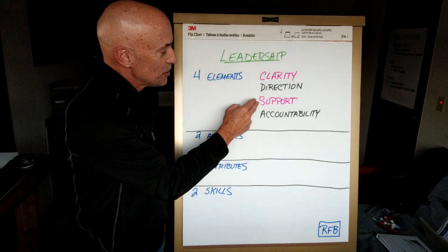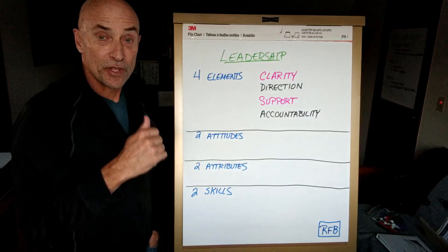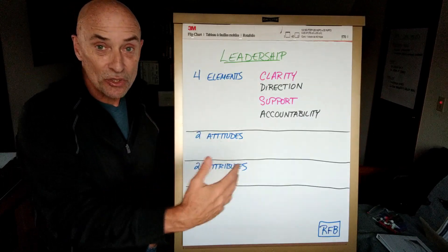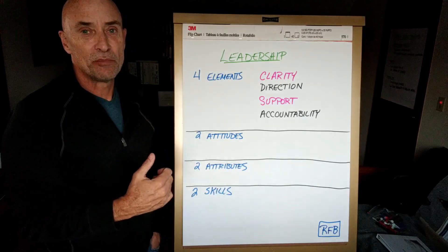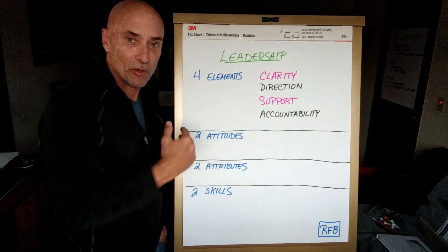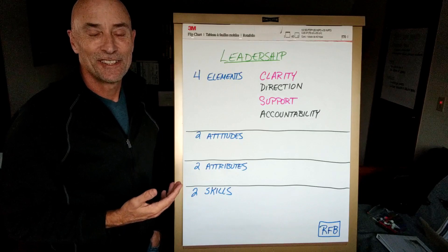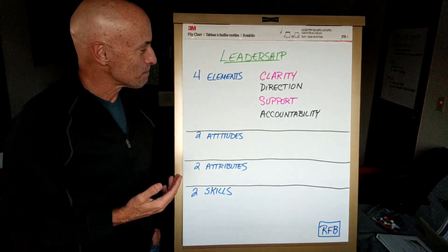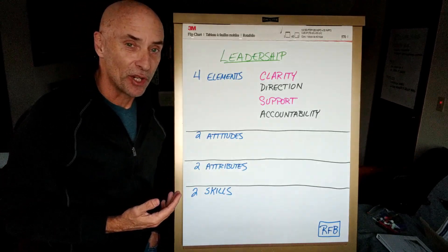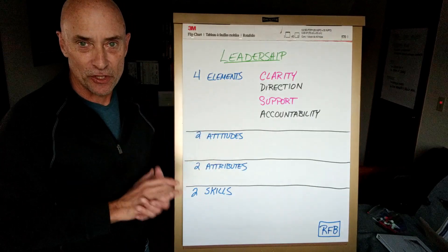Direction takes the form of very clear expectations. The next piece is support. Support is all the time, tools, resources that people need. It's incentives that reward the work that we want to see. It's making sure that people have training when they need training, and that people are in the right fit for the job.